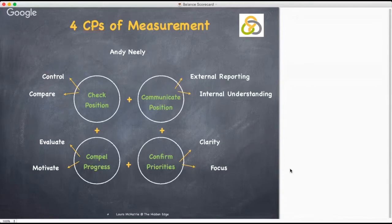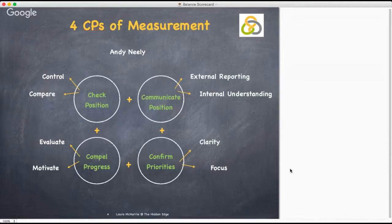Communicate position — they are used to report performance internally and to the organisation's external stakeholders. Confirm priorities — in other words, the crucial factors on which managers must focus. Compel progress — because performance against key performance indicators is used to evaluate managers and staff, this ensures that every employee will want to achieve them.